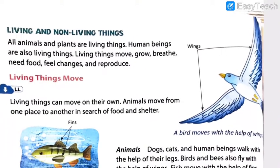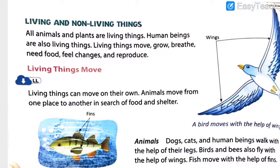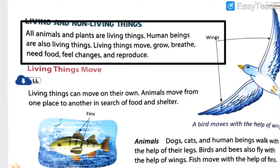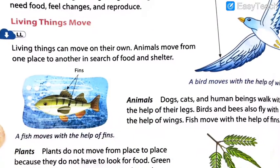So this was a warm-up exercise for you. Let's get started with the reading and understanding part of this chapter. Living and non-living things: all animals and plants are living things. Human beings are also living things. Living things move, grow, breathe, need food, feel changes and reproduce. You have to remember these characteristics of living things. Let us have a brief idea of each of these points.